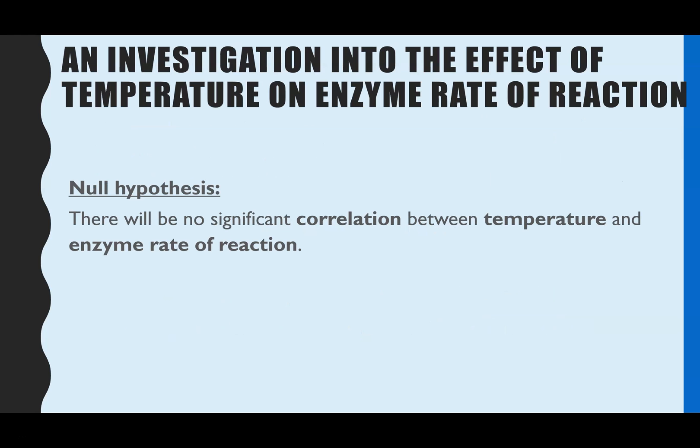So step one you need a null hypothesis. So this would be you're stating there is no pattern and in a correlation coefficient the pattern is correlation. So we'll be stating there is no significant correlation and you always have to say between the two variables. So between the temperature and enzyme rate of reaction. So this is the null hypothesis we're going to do the statistic based on to see do we accept that this is correct or reject that it's not and there is actually a correlation.